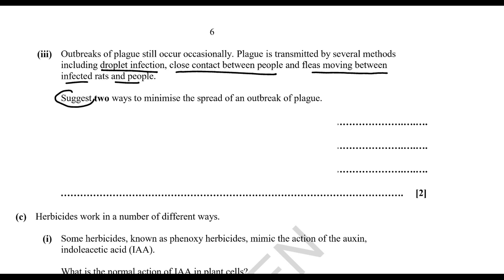The question asks you to suggest two ways to minimize the spread of an outbreak of plague. 'Suggest' means you haven't been directly taught about these methods, but you should have been taught about methods of infection. You should consider how to minimize droplet infection, how to minimize close contact between people, and how to prevent fleas moving between infected rats and people. If you address ways to minimize these factors, you will minimize the spread of the outbreak.